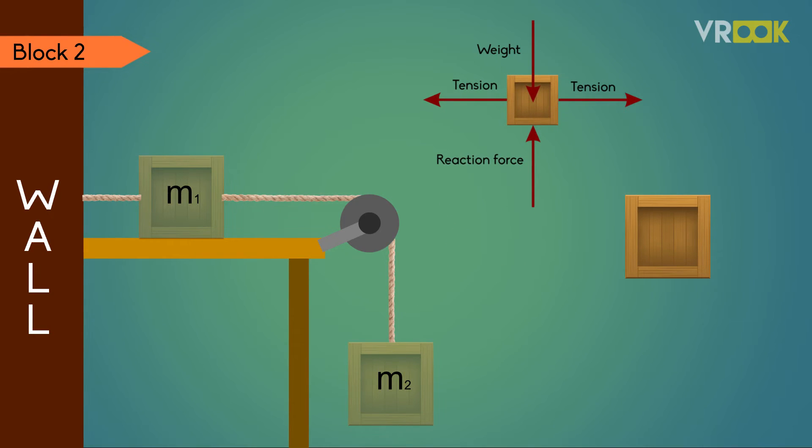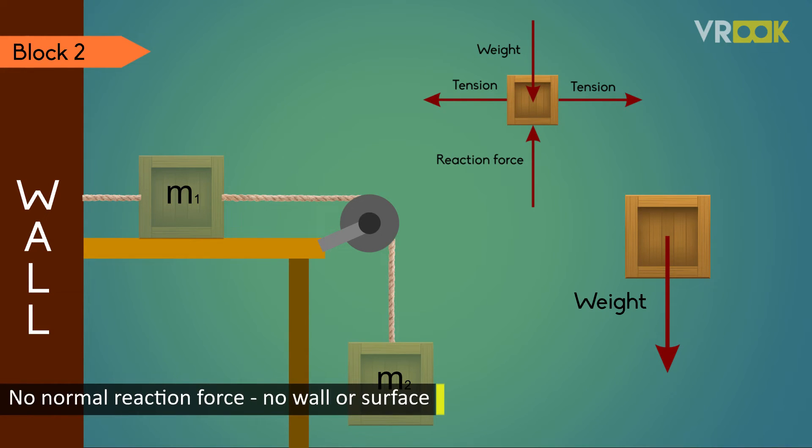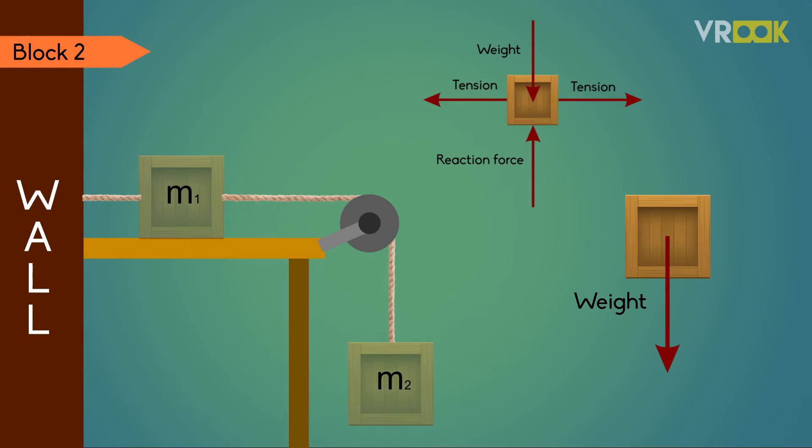Similarly in block 2 we consider weight of the body and draw it. There is no normal reaction force as there is no wall or surface in contact with the block.